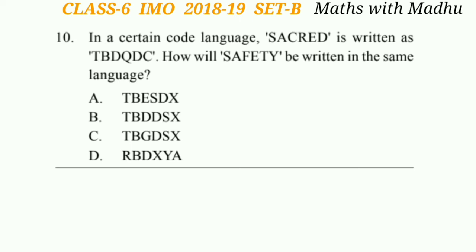Now question 10. In a certain code language, 'sacred' is written as 'tbdqdc'. How will 'safety' be written in the same language? T comes after S, B comes after A, D comes after C, Q comes before A, D comes before E, and C comes before D in the English alphabet. Similarly applying this for 'safety', we get option C — that is 'tbgdsx'. So the answer will be option C.